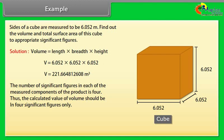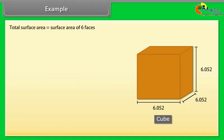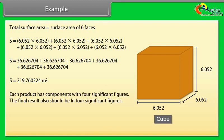Thus the calculated value of volume should be in 4 significant figures only. Thus V equal to 221.7 meter cube. Total surface area is equal to surface area of 6 faces. After calculation we get S is equal to 219.76 meter square. Each product has components with 4 significant figures. The final result also should be in 4 significant figures. Thus S is equal to 219.8 meter square.